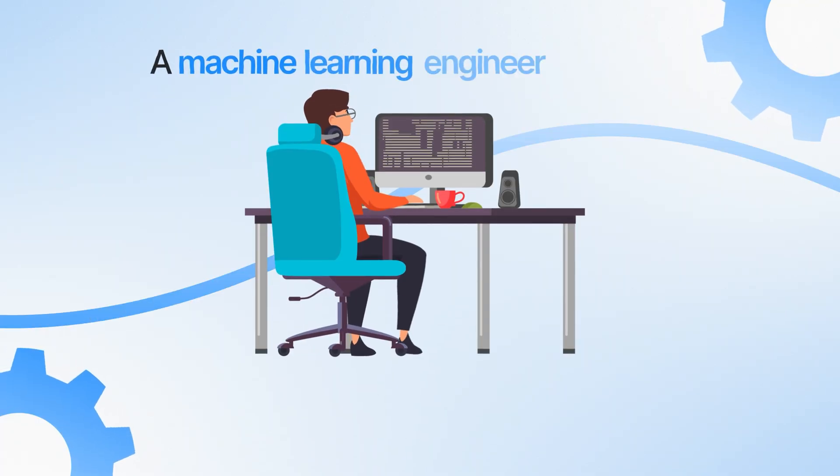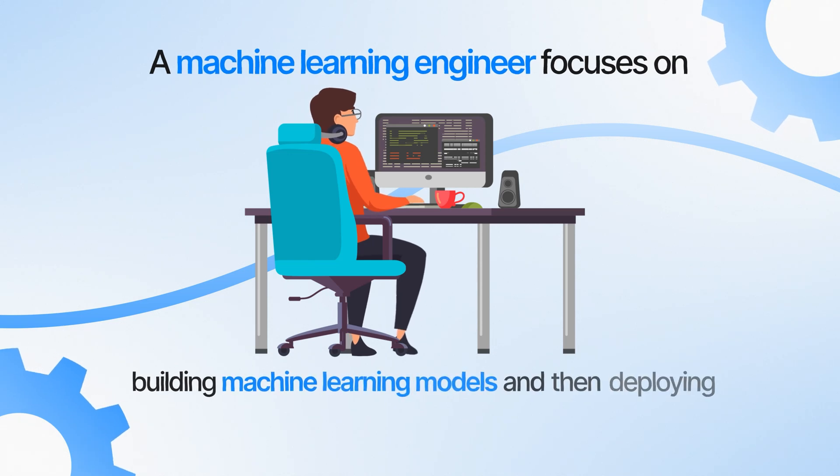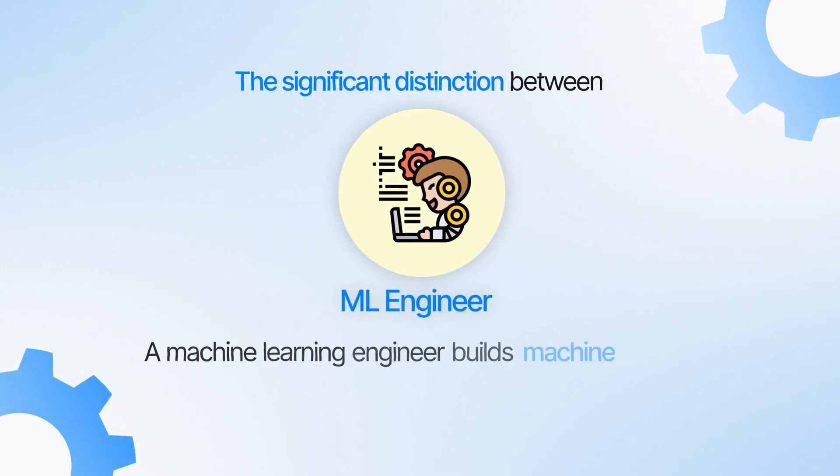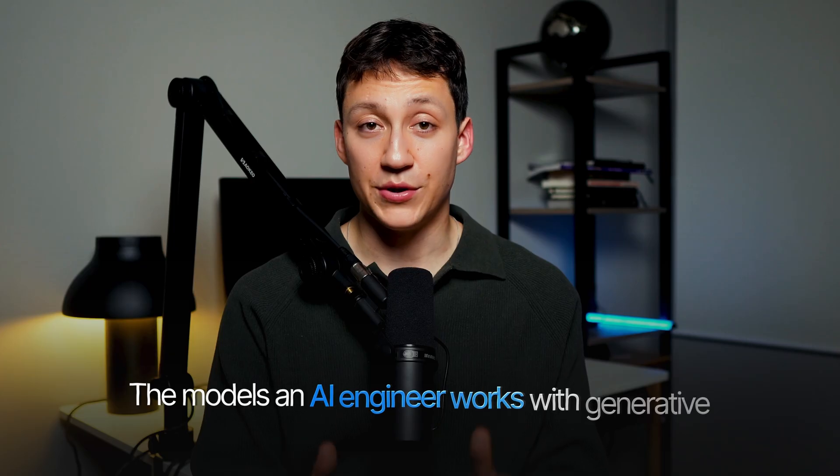A machine learning engineer focuses on building machine learning models and deploying them into production systems. The role initially came from software engineering, where there was demand for engineers with machine learning skills — similar to how there's now demand for software engineers with AI skills. The key distinction is that a machine learning engineer builds models directly from scratch. However, these models are more specific and narrower in what they solve — for example, a model that detects credit card fraud or a recommendation system for a social media app. These models are very targeted, whereas the models an AI engineer works with are generative, foundational, and usable across a wide variety of tasks like ChatGPT.